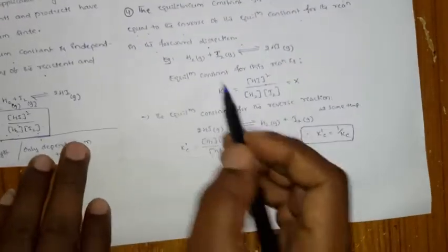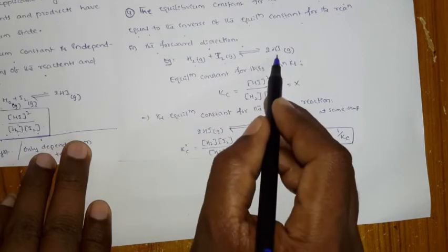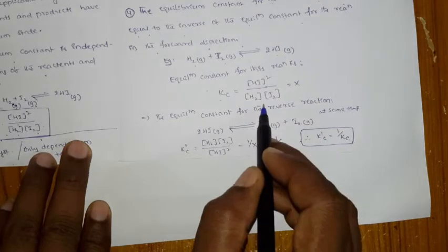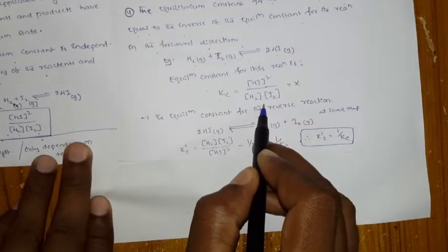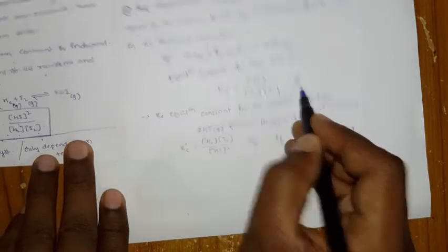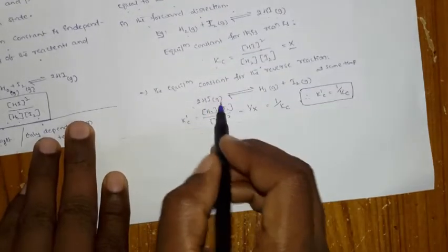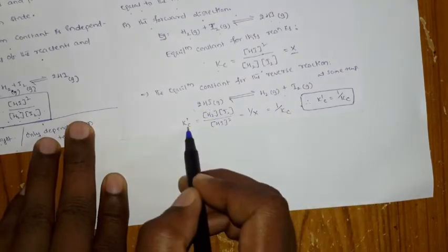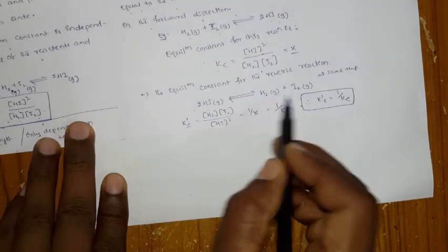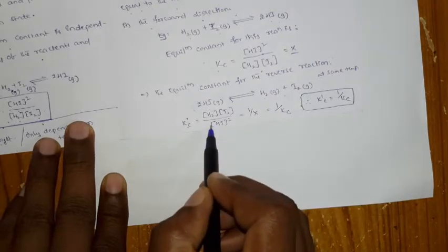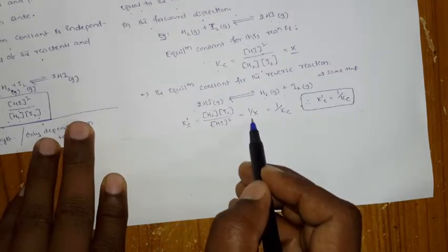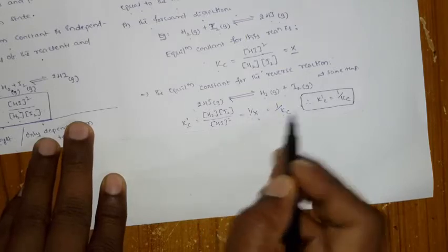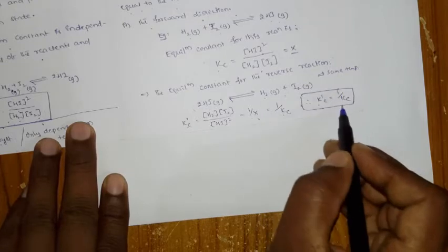For the hydrogen iodine reaction: H₂ + I₂ ⇌ 2HI, the Kc equals concentration of HI squared divided by concentrations of H₂ and I₂ — call this value X. When you reverse the reaction — 2HI ⇌ H₂ + I₂ — the Kc prime equals concentrations of H₂ and I₂ divided by concentration of HI squared, which is 1/X. So K′c = 1/Kc: when you reverse a reaction, the equilibrium constant becomes the reciprocal.